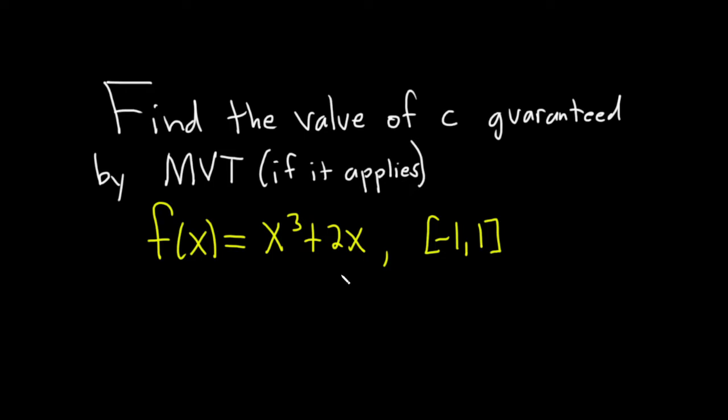So the mean value theorem says that your function should be continuous on the closed interval. This is a polynomial so it's continuous everywhere, in particular on this interval. And it should be differentiable on the open interval, in this case negative 1 comma 1. And again this is a polynomial so it's differentiable everywhere, so there is no issue.